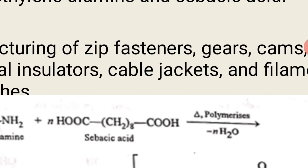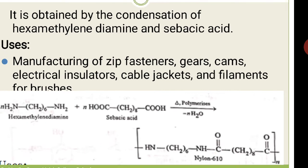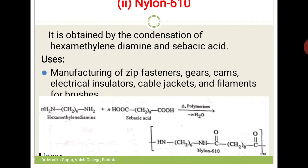This dibasic acid is: COOH-(CH₂)₈-COOH, giving 10 carbon atoms. Everything else is the same. You take N molecules of hexamethylene diamine and N molecules of this dibasic acid, polymerize them, and you get nylon 6-10.